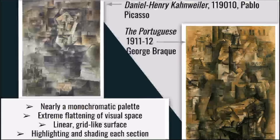Both pieces have a nearly monochromatic palette, extreme flattening of visual space, a linear grid-like surface, and highlighting and shading on each section. Several writers at the time argued that these artists were actually giving viewers more information about the subject matter even though it was abstract, rather than less — because they were providing a more composite view compared to a single vantage point in perspective.